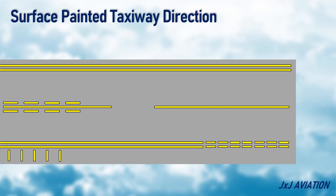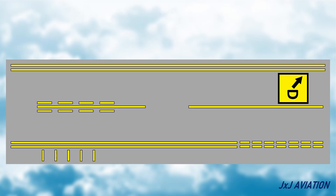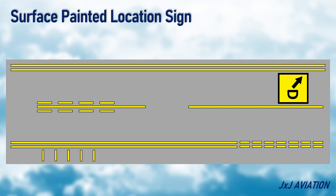These signs are painted on the side of the taxiway centerline, towards which the taxiway is located. Surface painted location signs have a black background with yellow inscriptions, and are painted to the right of the taxiway.